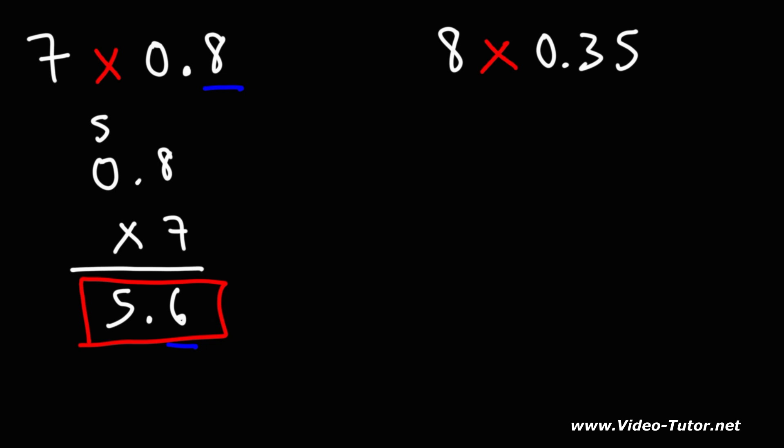For the second example, we have 8 times 0.35. So I'm going to write it this way, 0.35 times 8. Putting the 8 on the bottom is going to make the problem a lot easier.